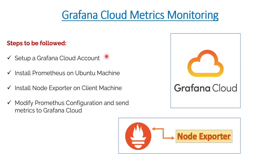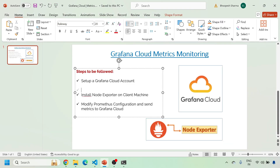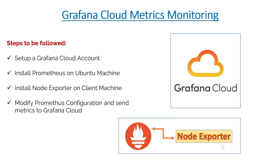Today we'll be starting a new playlist altogether. First, we'll try to understand how we can create a Grafana Cloud account — the SaaS service — and then we will use the existing Prometheus. We will install Node Exporter if it's not already on the machine, and finally we will ship all the metrics related to Node Exporter — basically the infrastructure metrics — from the local machine to Grafana Cloud.